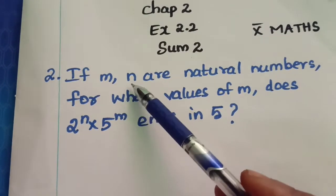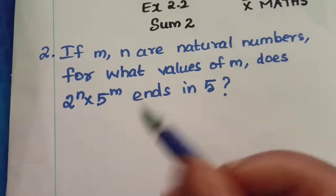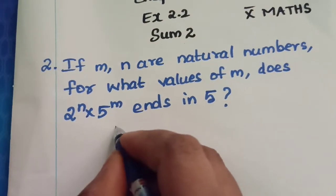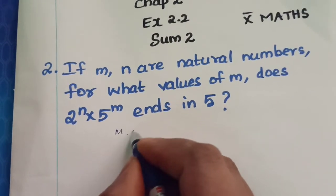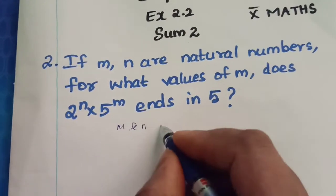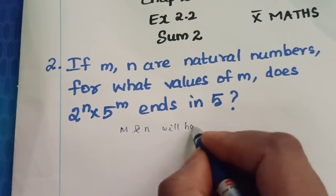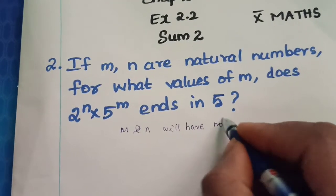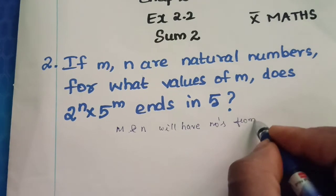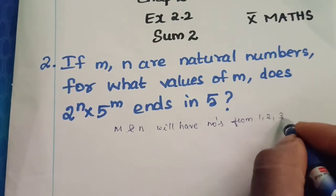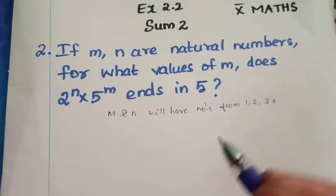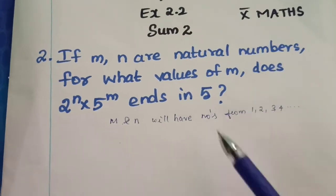So here the given condition is m and n are natural numbers. So what are the values? m and n will have numbers from 1, 2, 3, 4. It goes on, right? So they both are natural numbers.